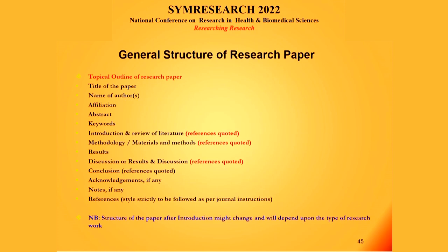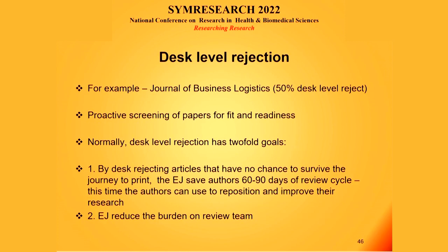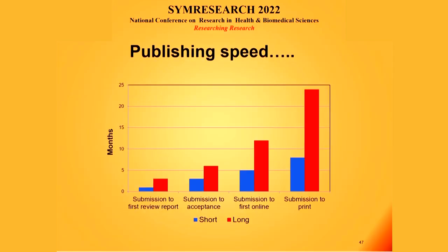The general structure of a research paper includes: title, author names, affiliation, abstract, keywords, introduction, review of literature where you quote large numbers of references, methodology, results, discussion, and conclusion. Many journals have started desk rejecting papers if they don't find the paper in line with their requirements. Even the fastest good quality journal takes from as few as two months to as high as eight months from submission to print. Normally the time is two years, and because of online systems it has now become one to one and a half years.